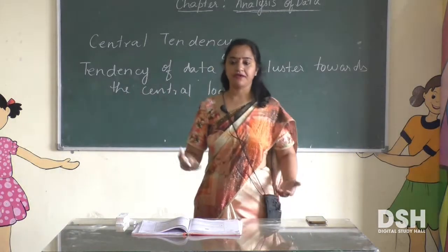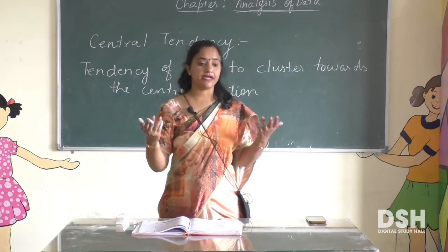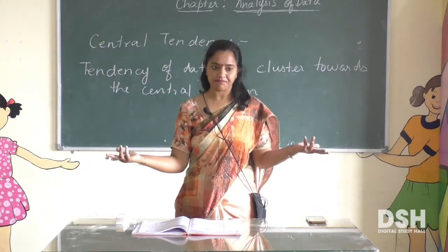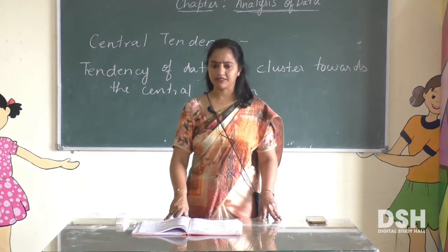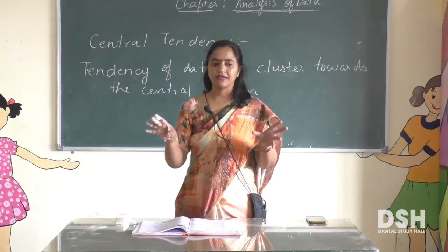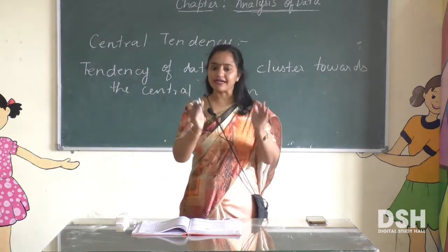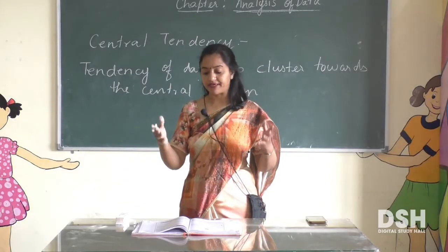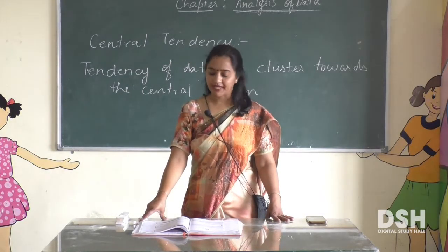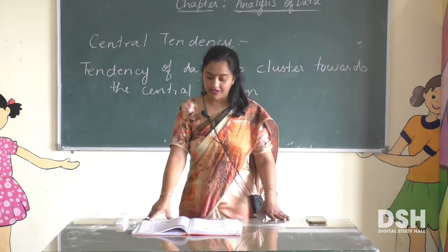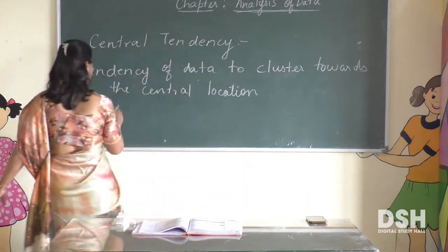For example, in your class you are getting marks like 20, 50, 100, 80, 90. This is clustered data. But if I give you the percentage — like last year you scored 97% — different subjects come together into one percentage. This is what is called central tendency.